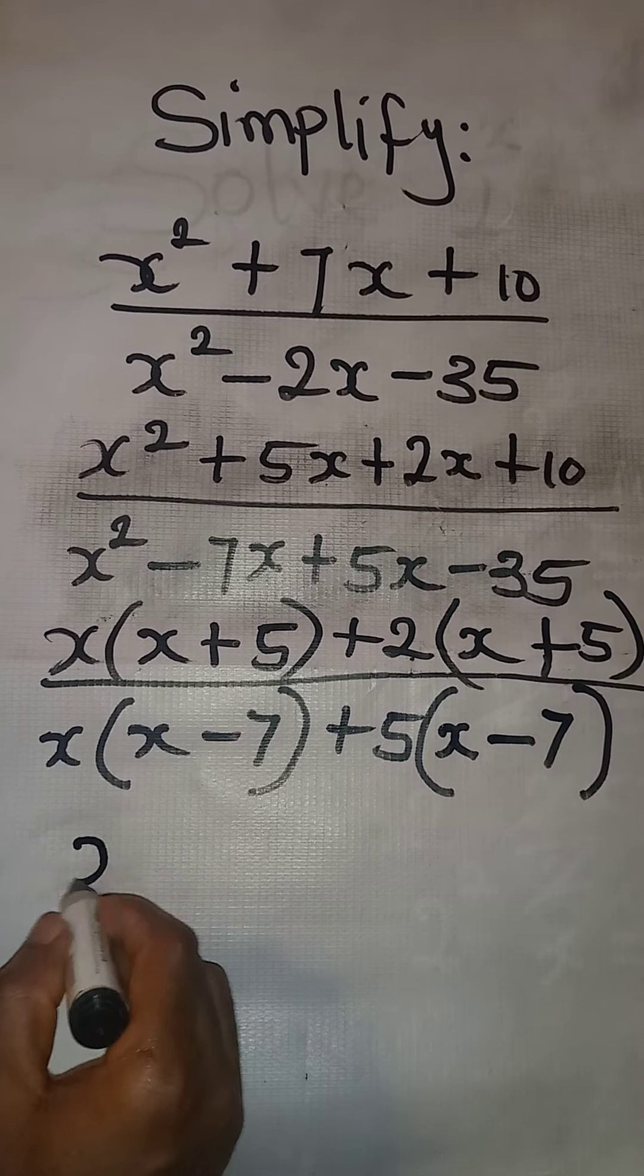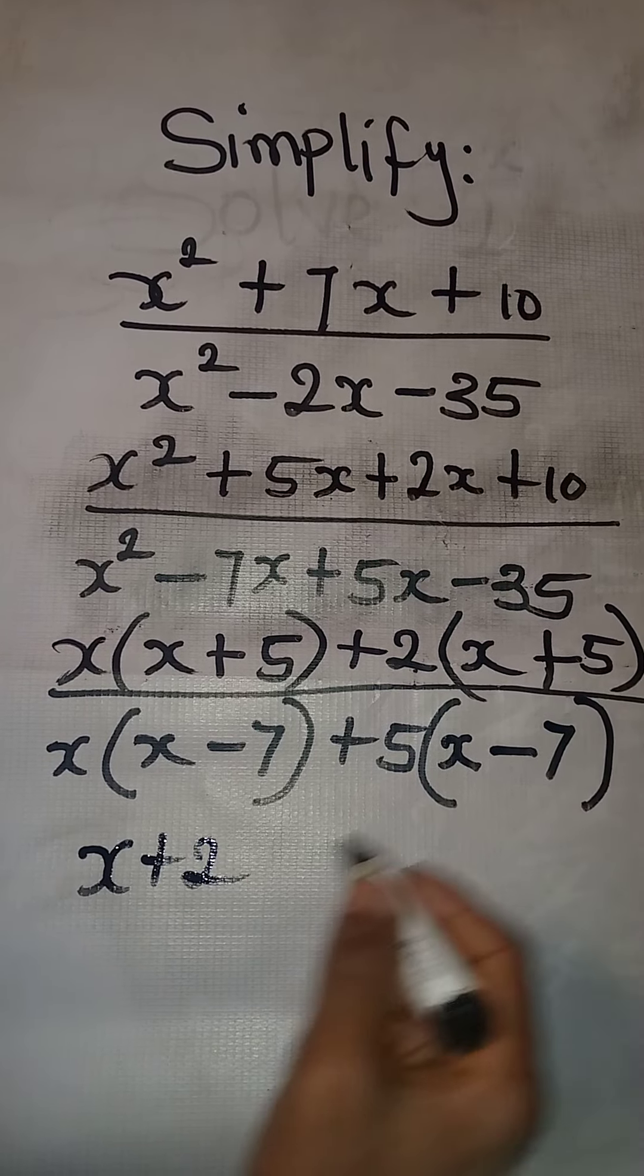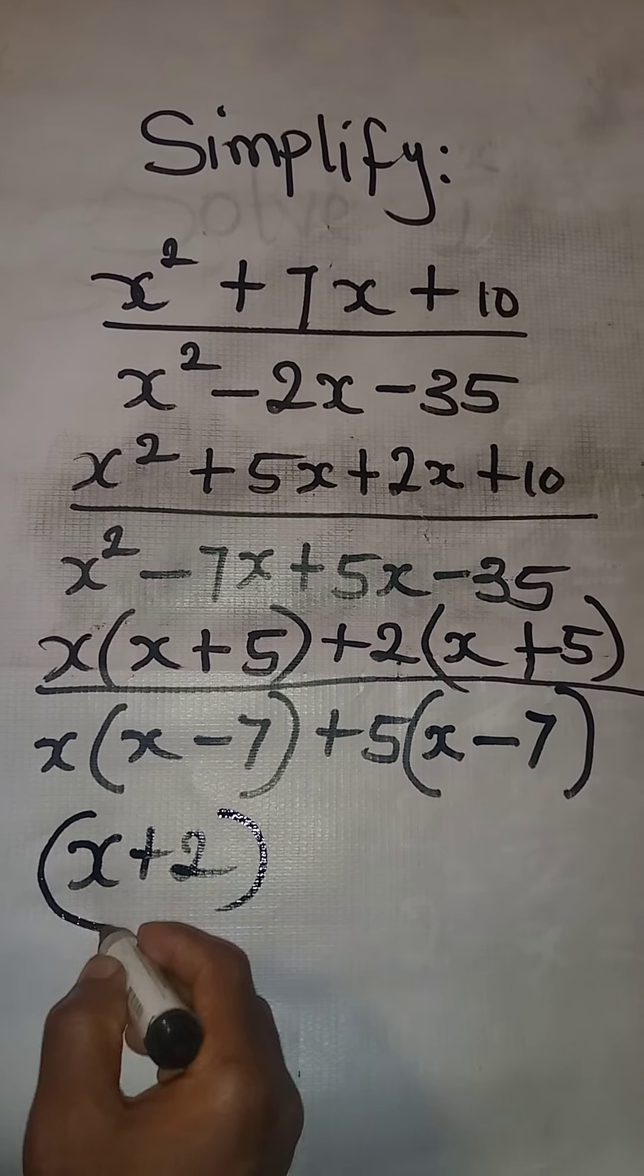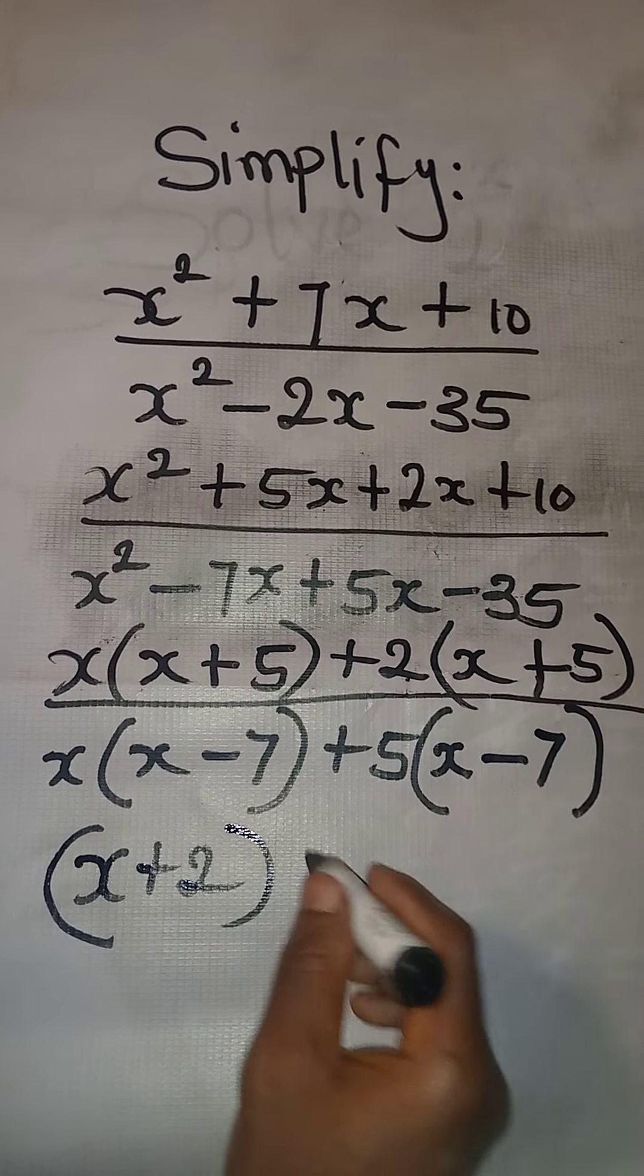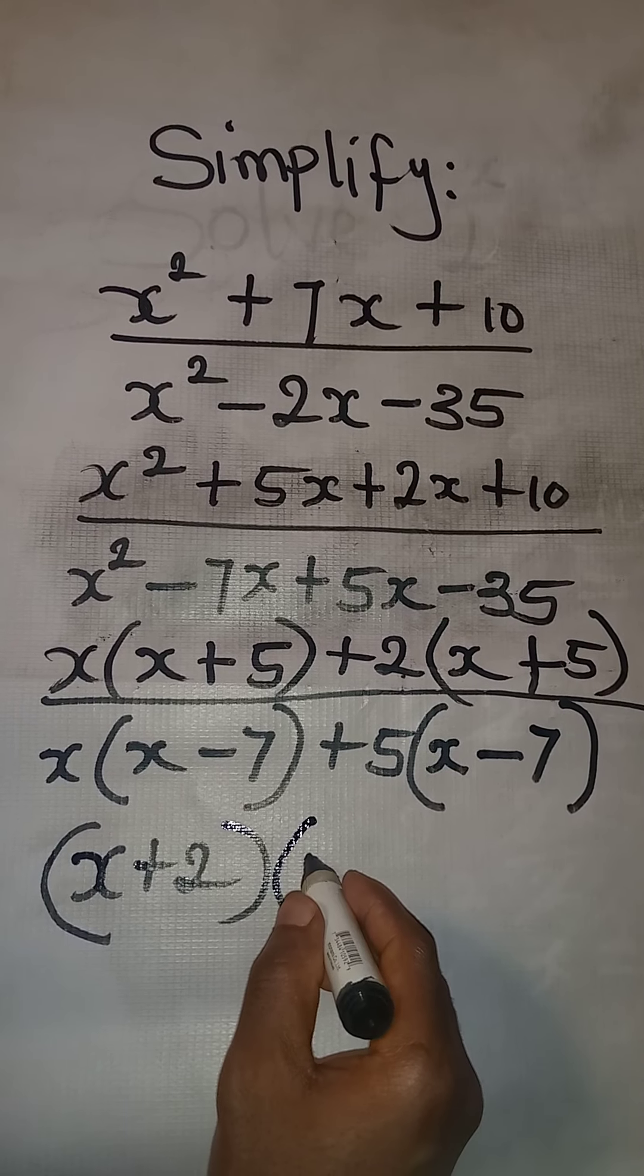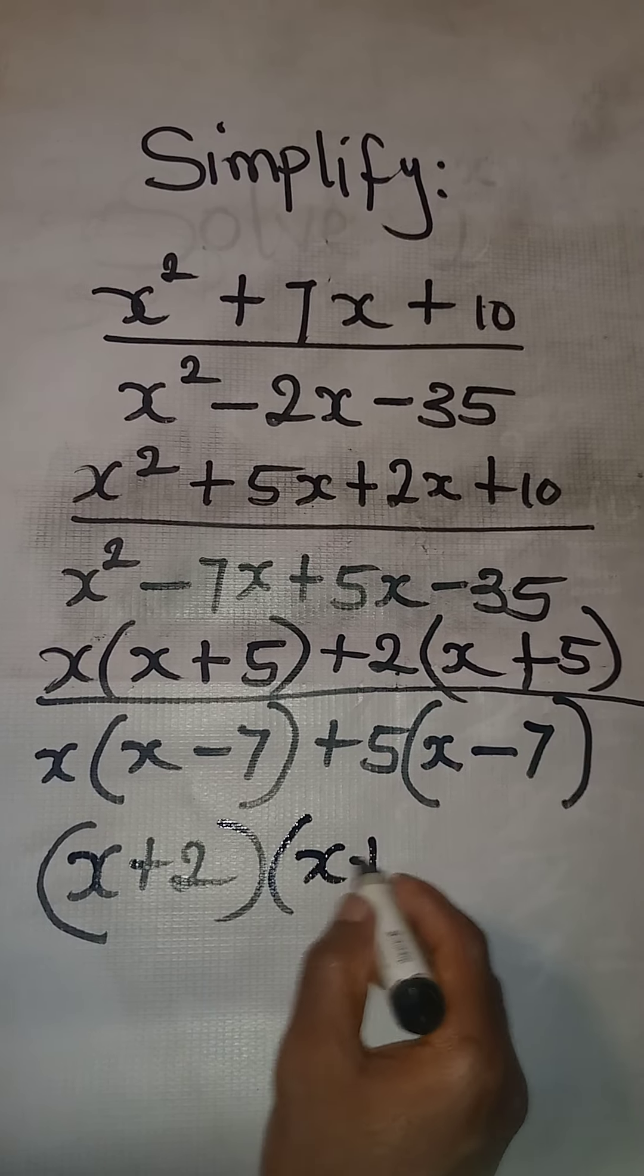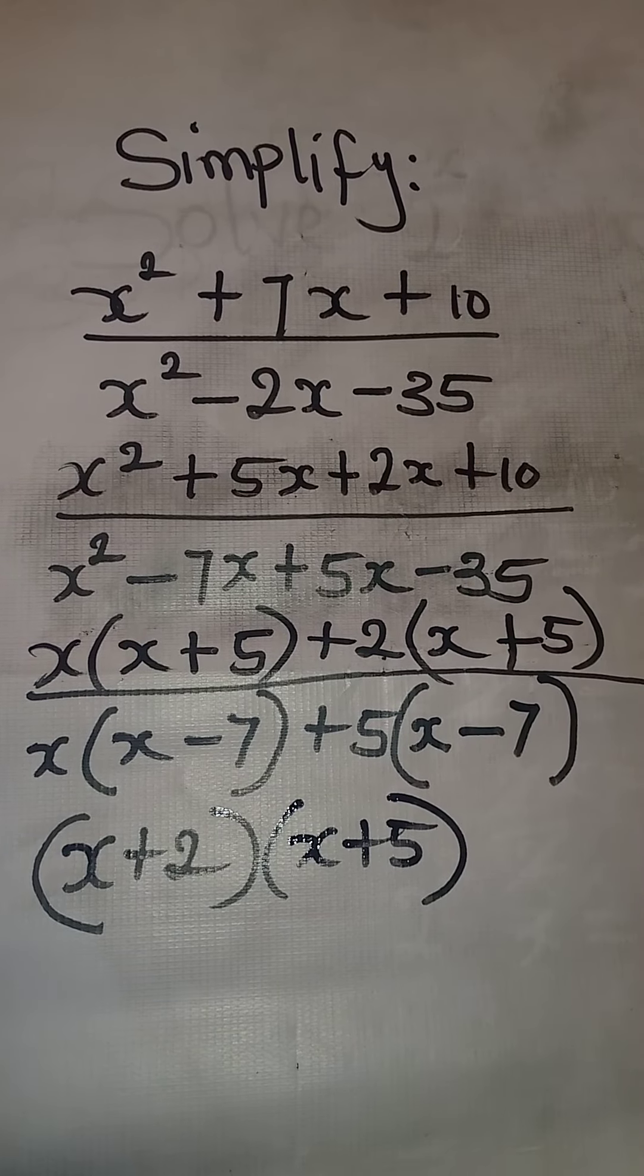That will be x plus 2. That is from the numerator. x plus 2, close the brackets. Then pick one of these. Because they are the same, we'll get one of them to be the common factor. And that will be x plus 5. This is for the numerator.